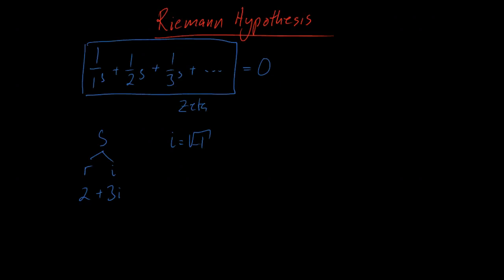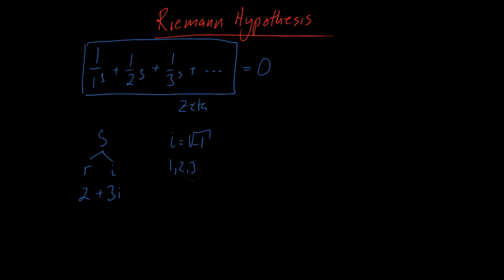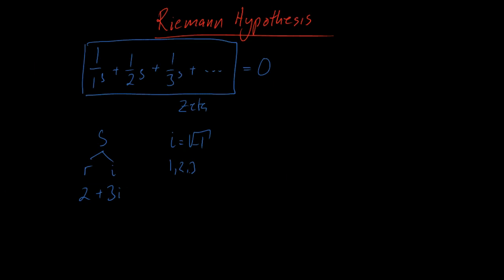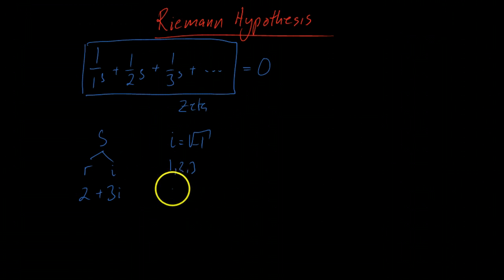Well, we invent new things — new symbols — because we have problems we want to solve. For example, you have whole numbers: 1, 2, 3, 4, 5. Then you ask: what is 3 minus 5? You can't answer that with positive whole numbers, so we invented negative numbers. And what if you take 1 divided by 2? Whole numbers aren't enough, so you invent integers and decimal numbers. We invent new things when we have problems to solve, and imaginary numbers solve the problem of the square root of negative four.